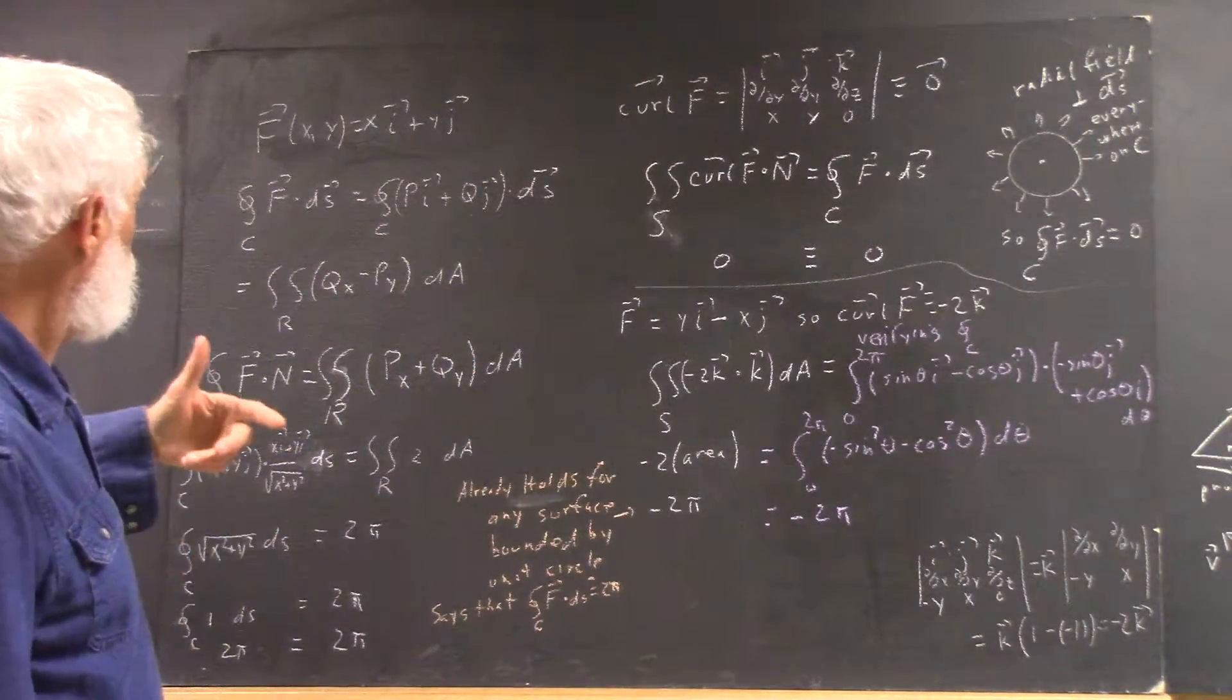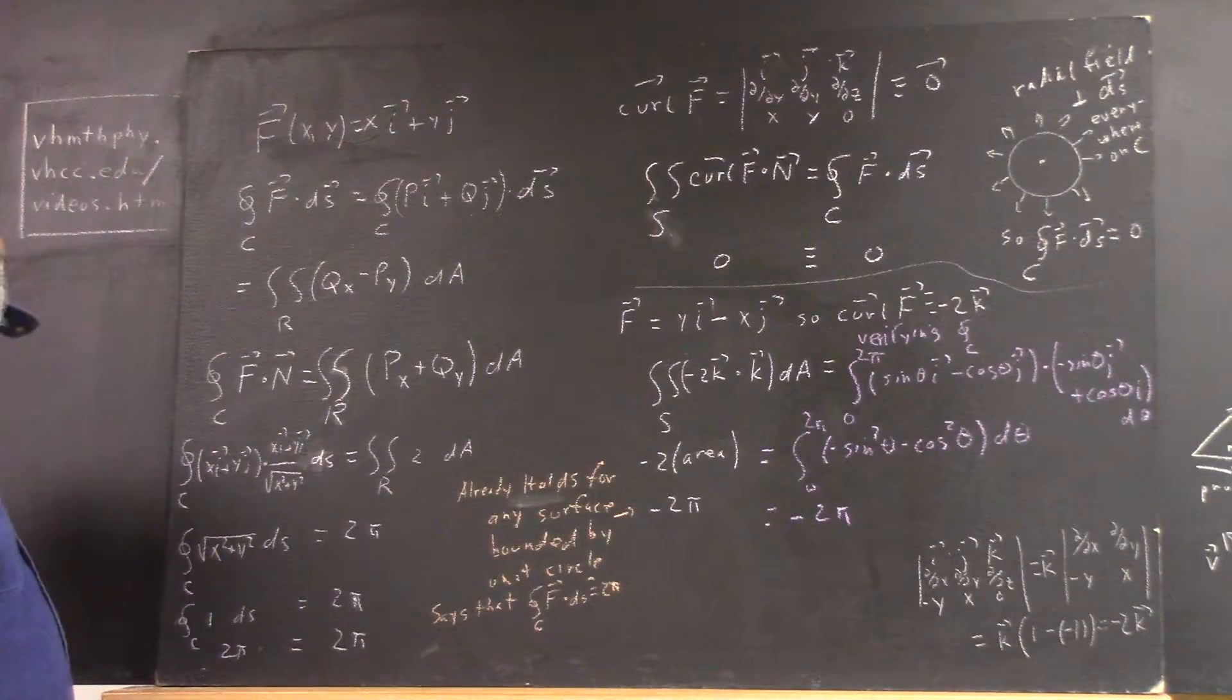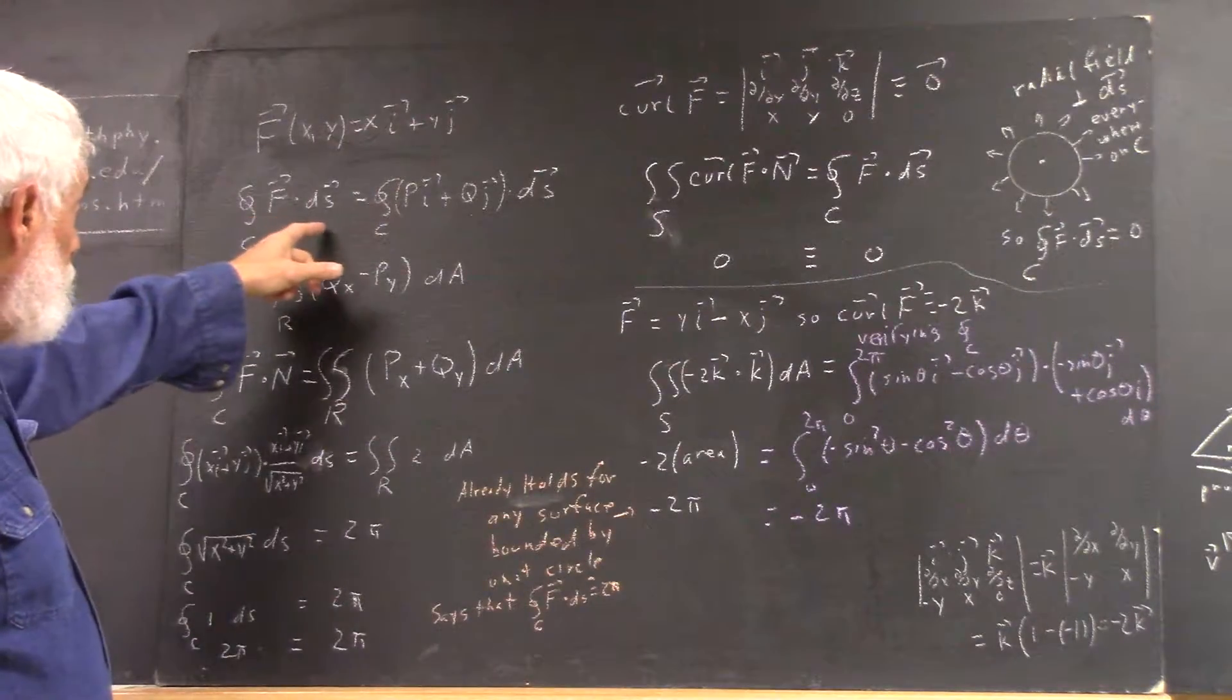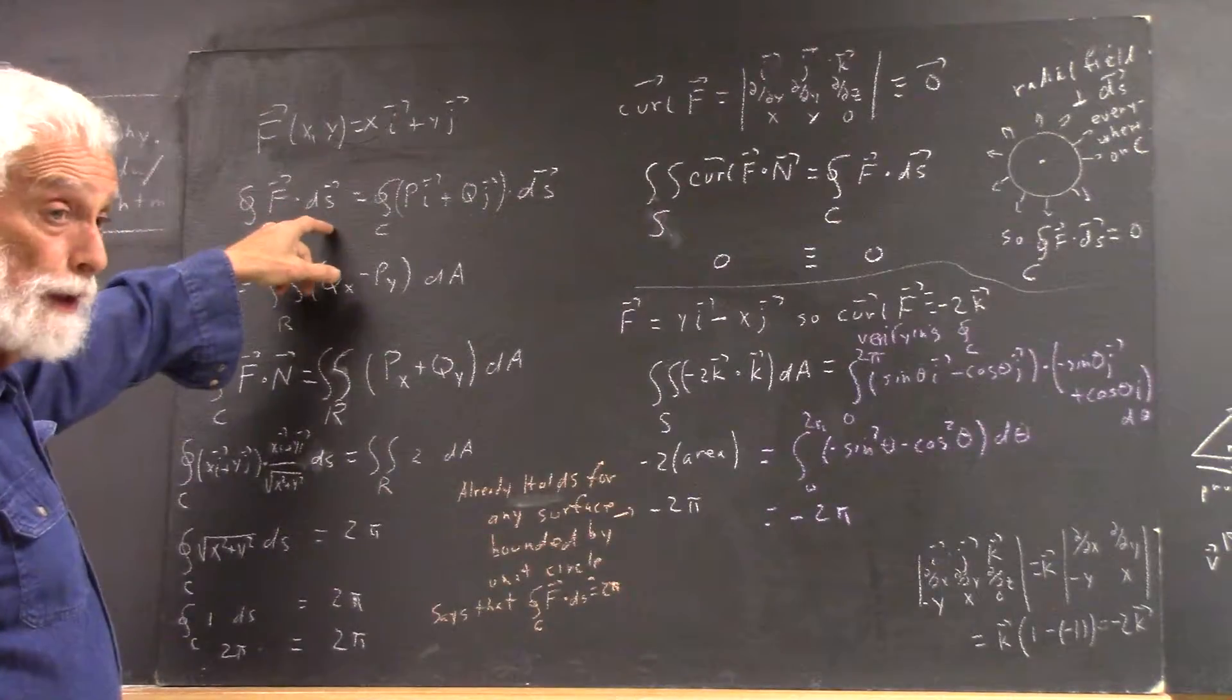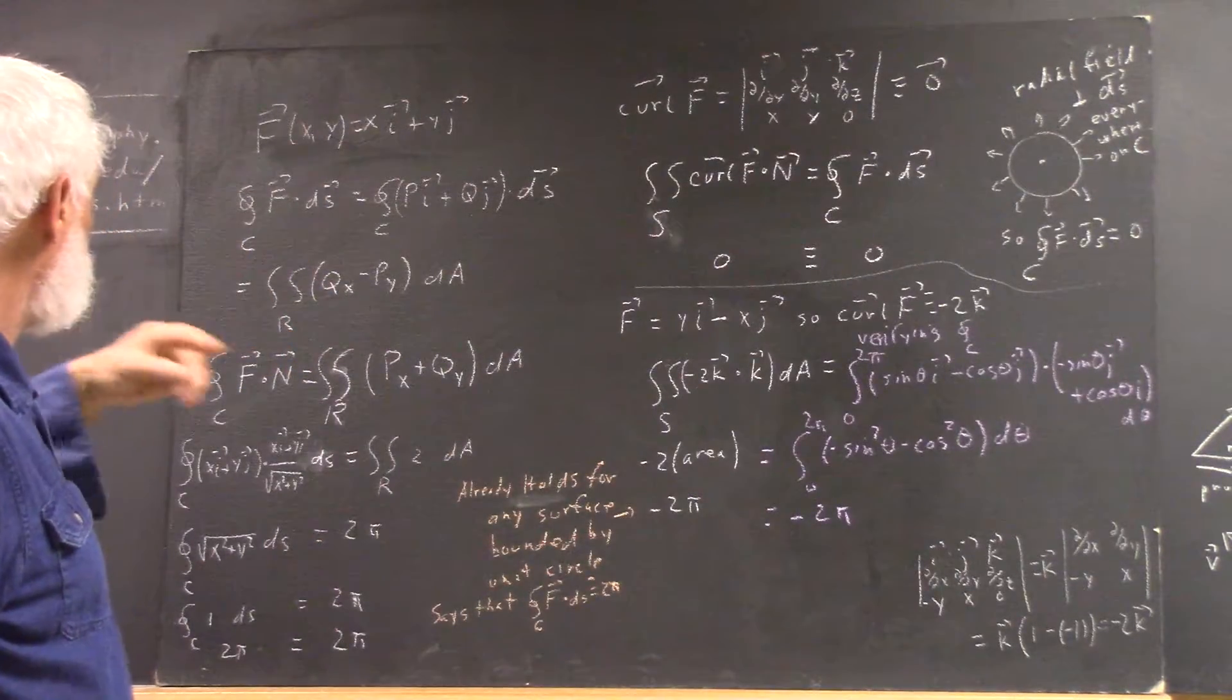We're going to do the integral of f. For any vector field f, the integral of f·ds around a curve is equal to what?